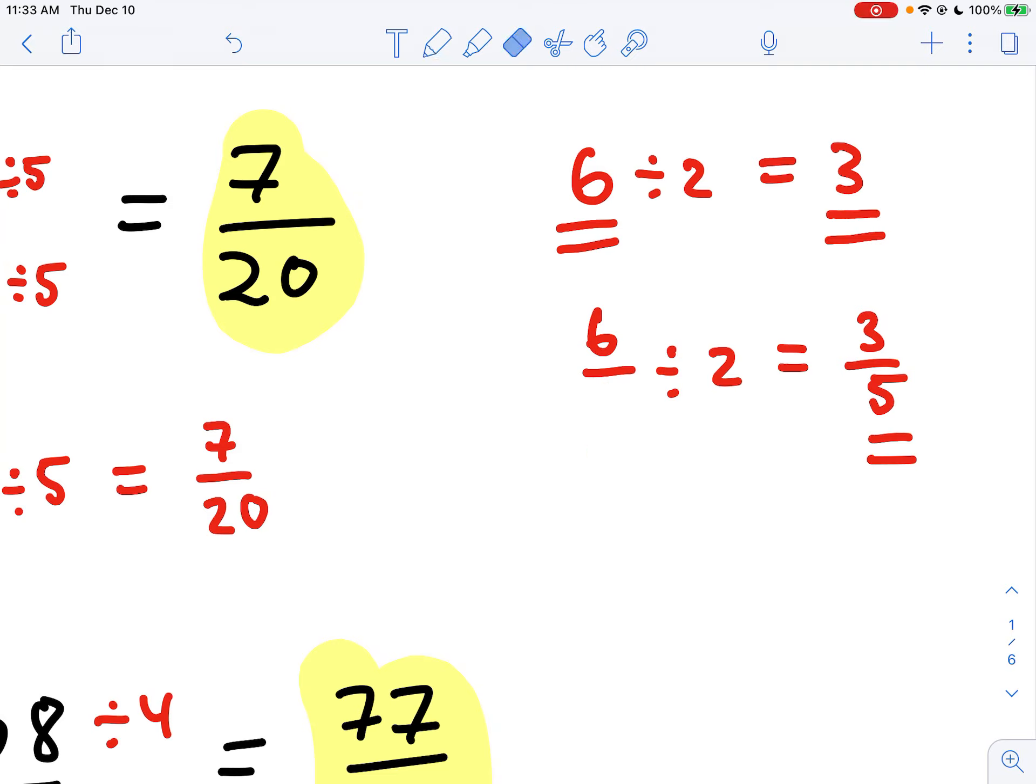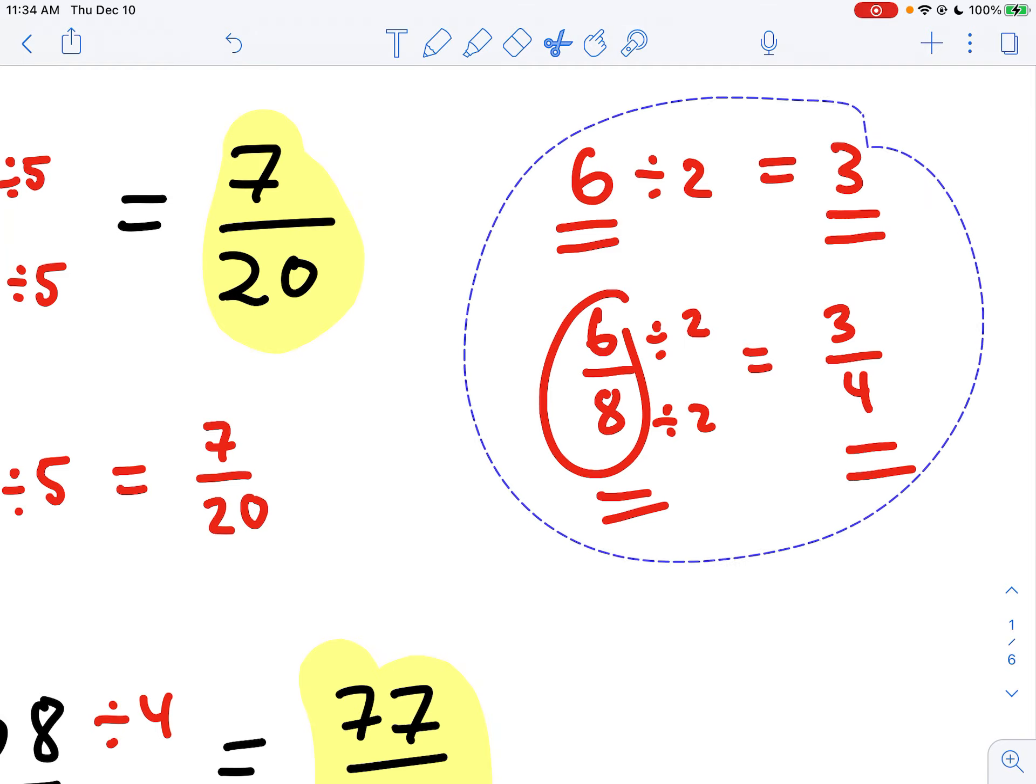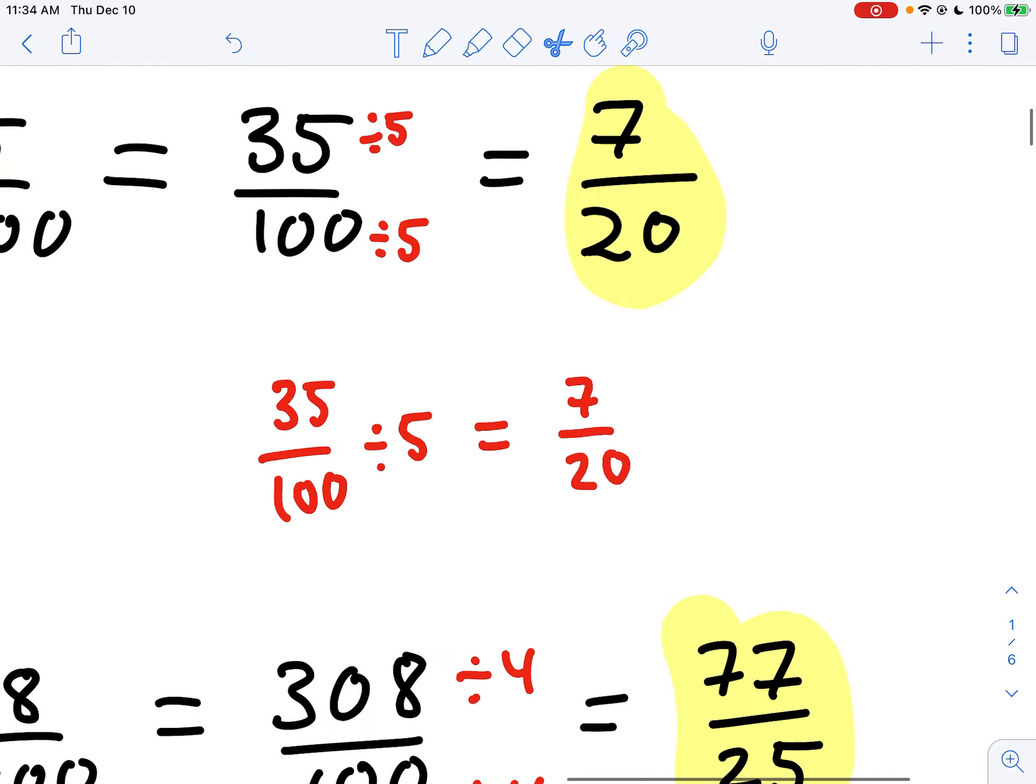When you're trying to do something where you're just making the same value but changing the way it looks, then make sure, let's say we have 6 eighths, you write divide by 2 twice, so that we have 3 fourths. And 3 fourths and 6 eighths are the same.